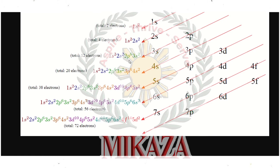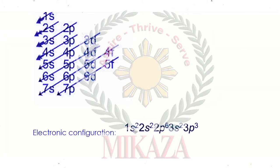Writing the full electronic configuration for 15 electrons: 1s² (2 electrons), 2s² (2 electrons), 2p⁶ (6 electrons), 3s² (2 electrons), 3p³ (3 electrons). Total: 2+2+6+2+3 = 15 electrons. So our electronic configuration is 1s², 2s², 2p⁶, 3s², 3p³.